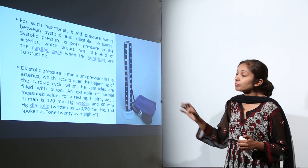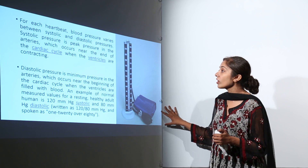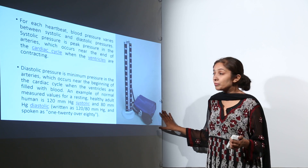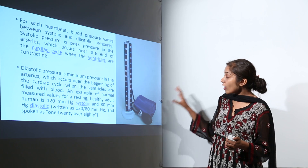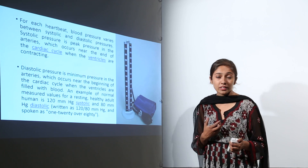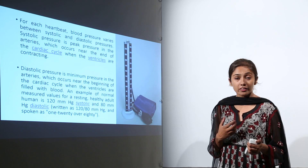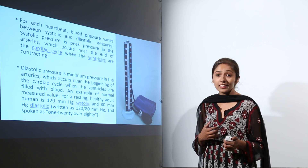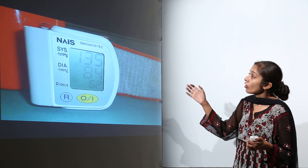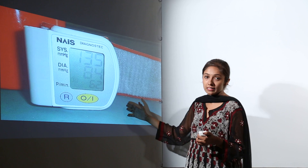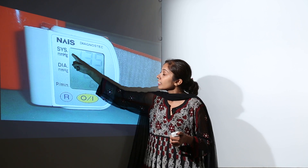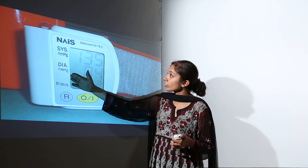We measure blood pressure using an instrument called a sphygmomanometer. Nowadays the traditional sphygmomanometer is not used because it contains mercury, which is highly poisonous. Now we have automatic ones which measure both systolic and diastolic pressure.